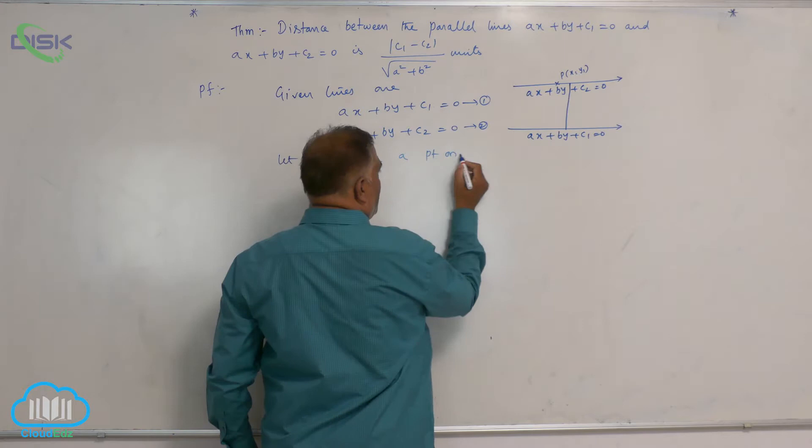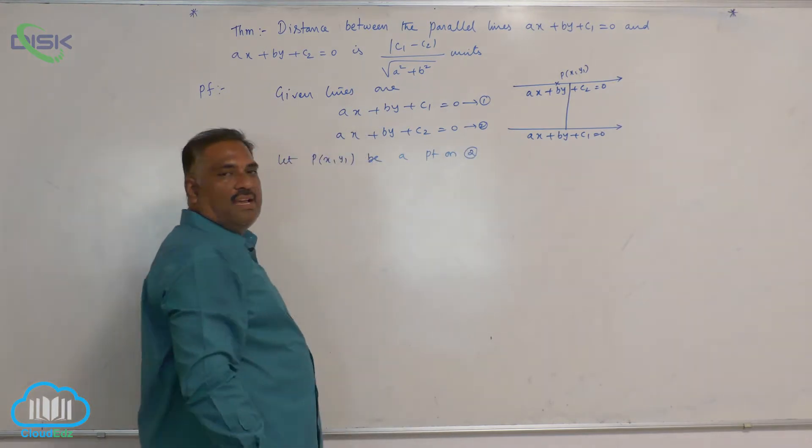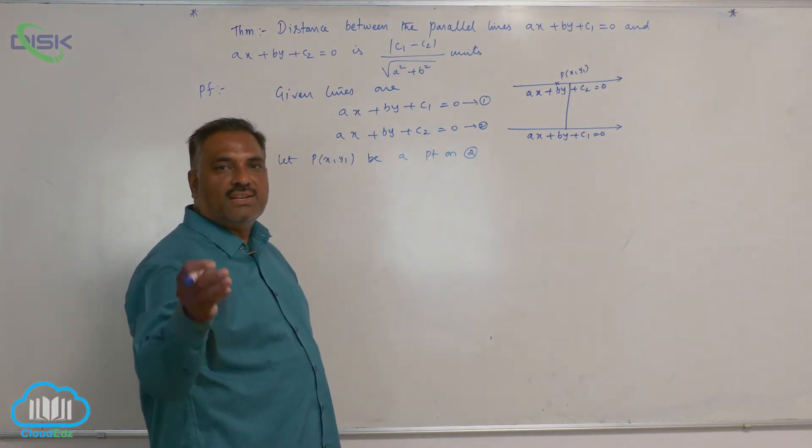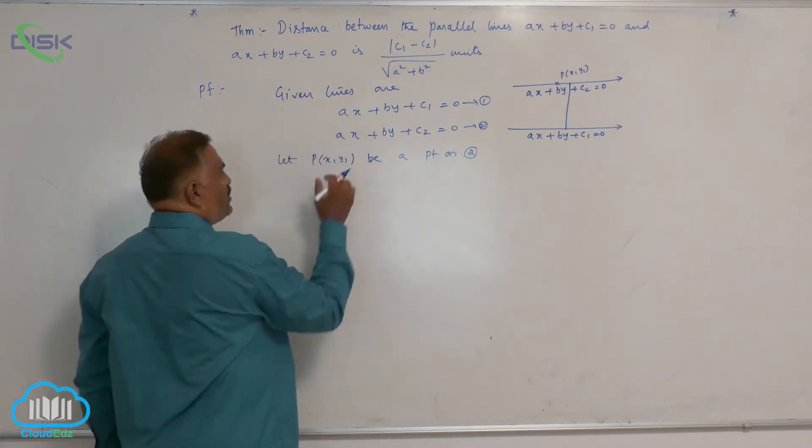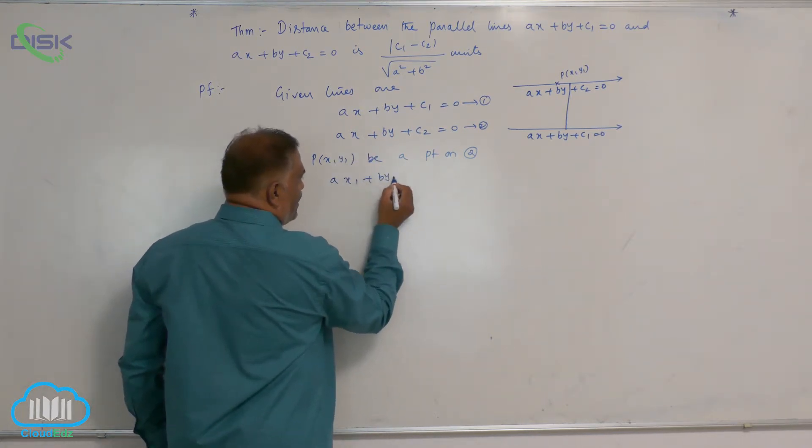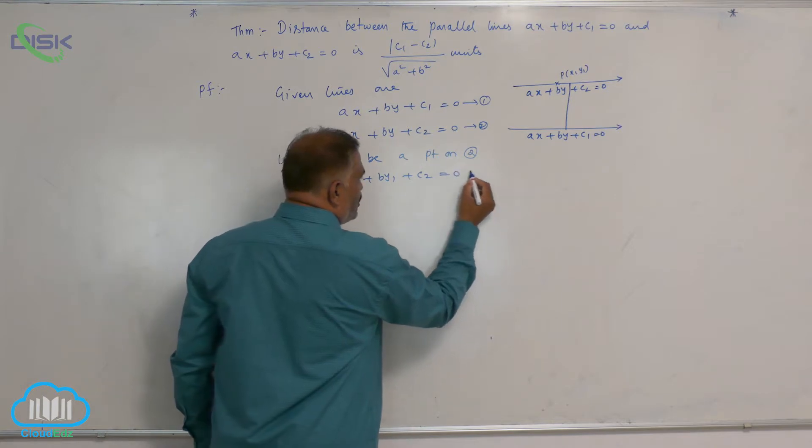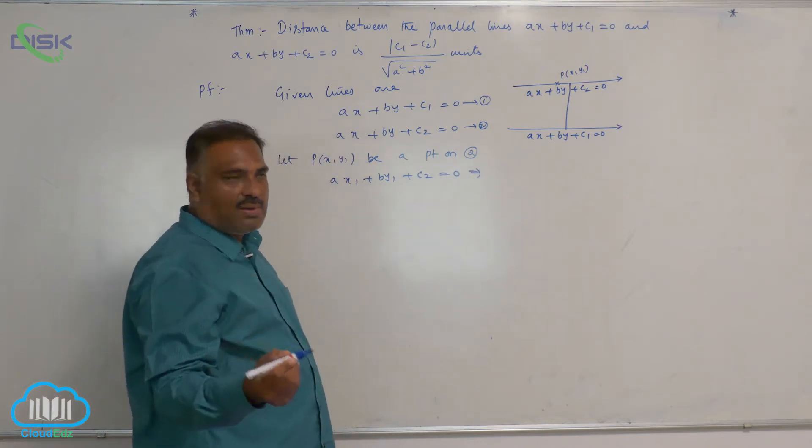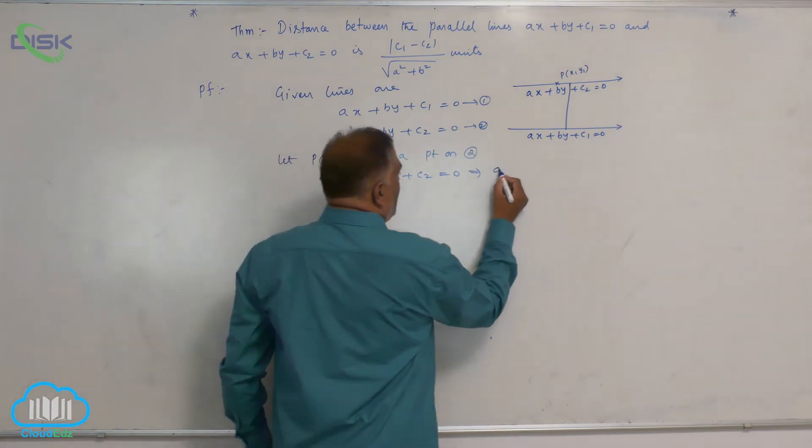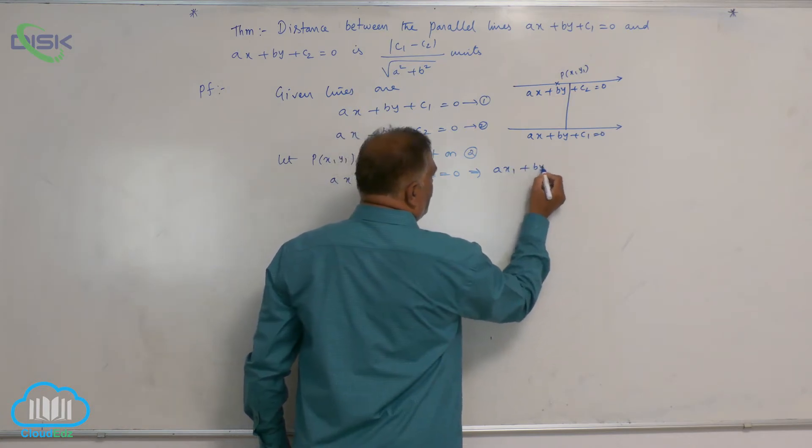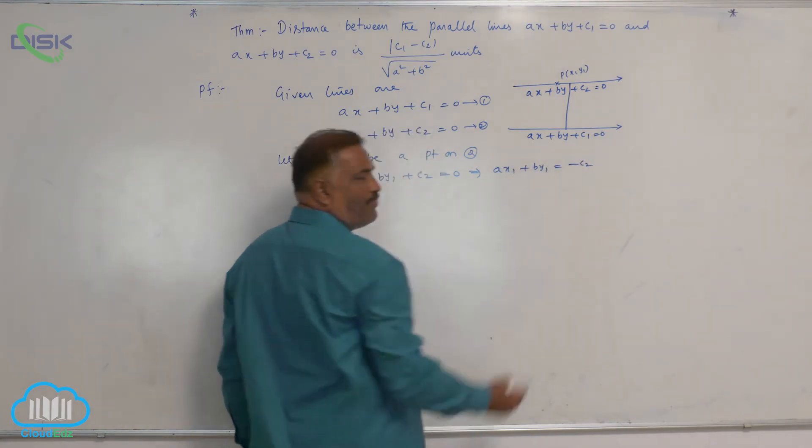We have taken a point on second equation. That means clearly, PX1 Y1 lies on straight line 2. Substitute here. AX1 plus BY1 plus C2 is equal to 0. For our simplification purpose, I wrote AX1 plus BY1 is equal to minus C2.